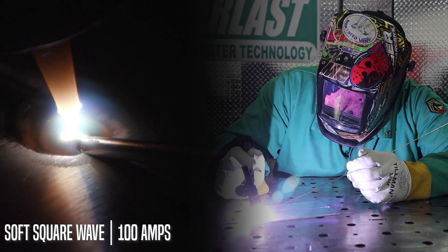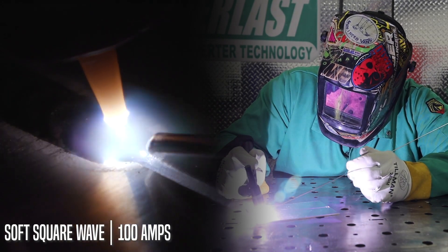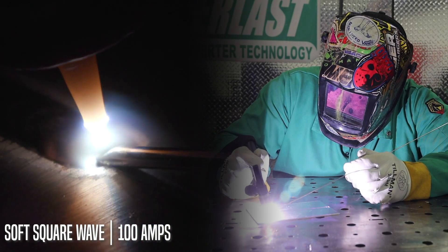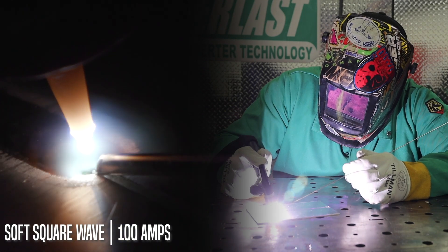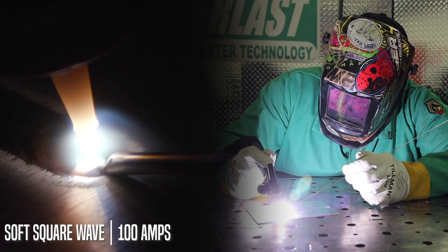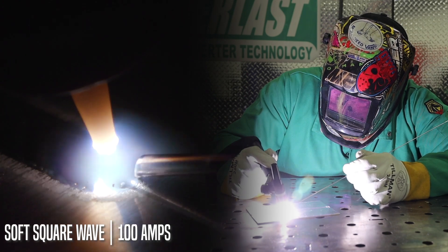Here we are with soft square wave. You can see we had a nice, smooth start. Speed is wetting in real nice. We've got a good travel speed now. Toes are tying in real good. We've got a nice, stable arc. We've got a nice, stable etching line. And this is exactly what soft square is supposed to do. It's a little bit softer than the advanced square.